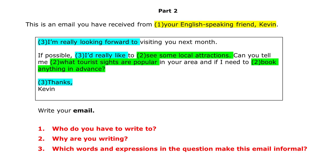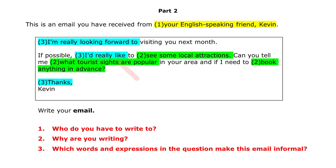Question 2: why are you writing? You're writing to give information about popular tourist sites and to tell your friend if advanced booking is necessary. Question 3: which words and expressions in the question make this email informal? One example is 'I'm really looking forward to' — the formal version is 'I look forward to' plus -ing. 'I'd really like' is another informal expression. 'I would be extremely interested to see' would be a formal version. And 'thanks' is informal — 'thank you in advance' or 'I look forward to receiving your reply' would be more formal.